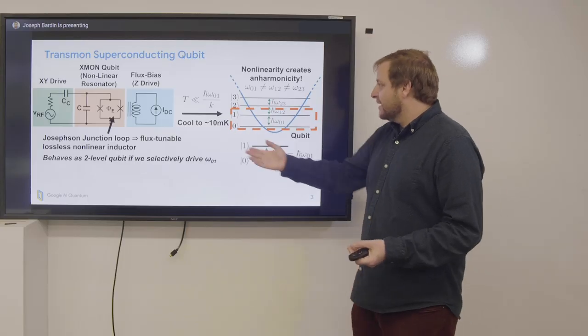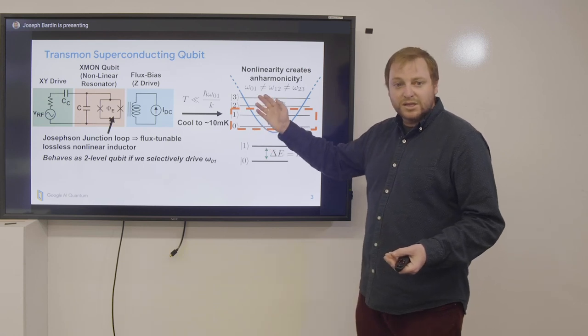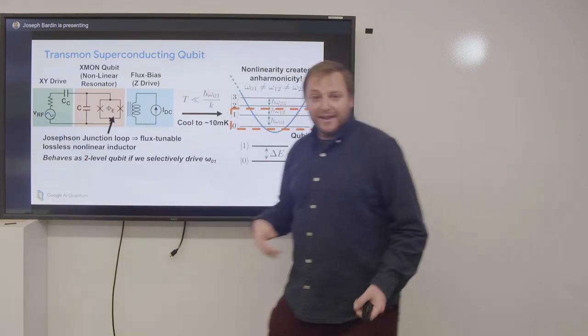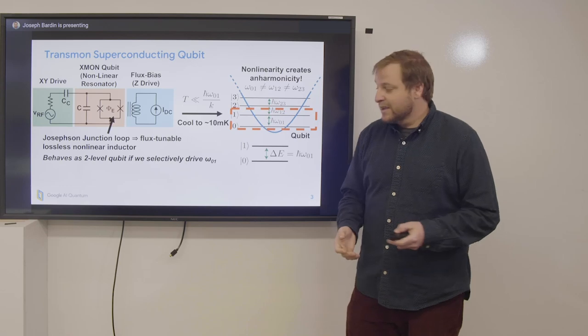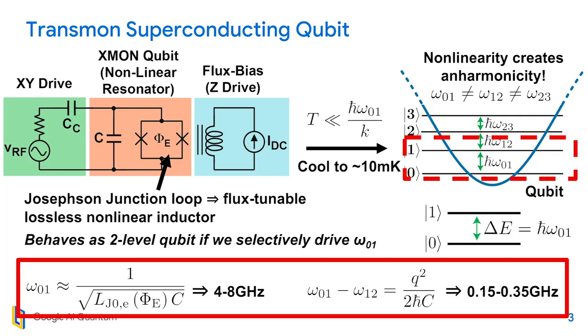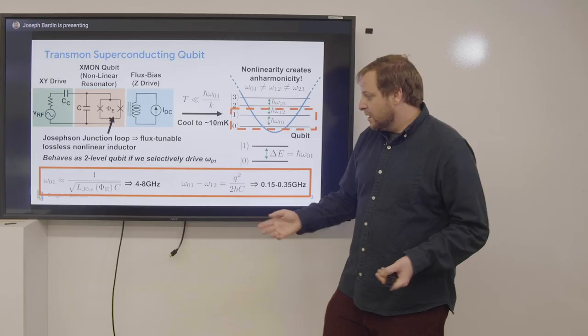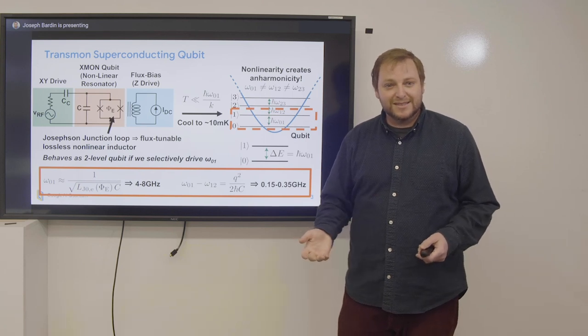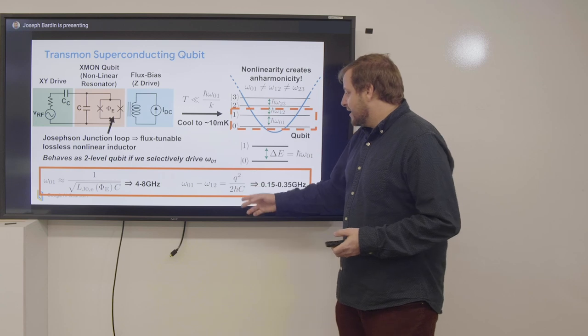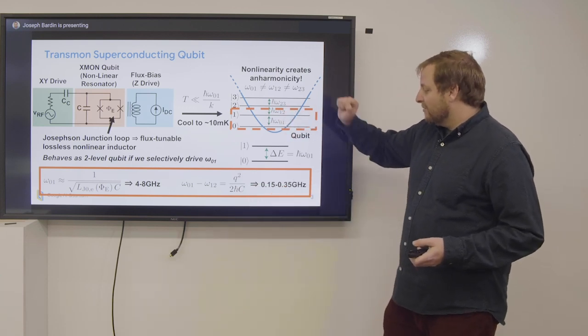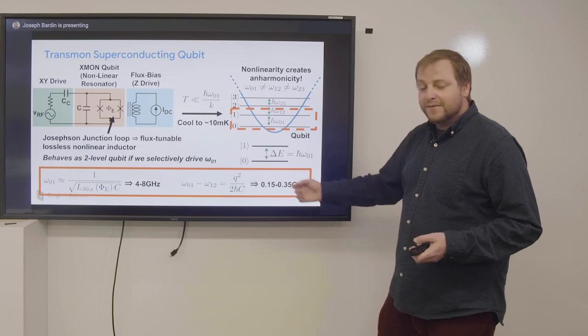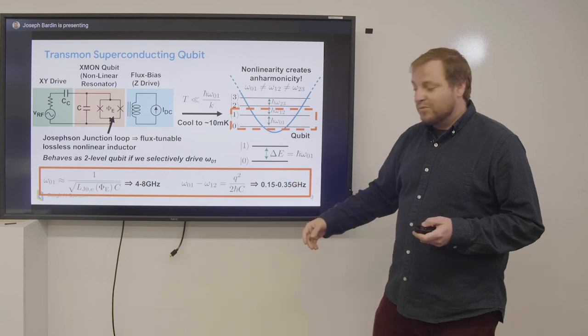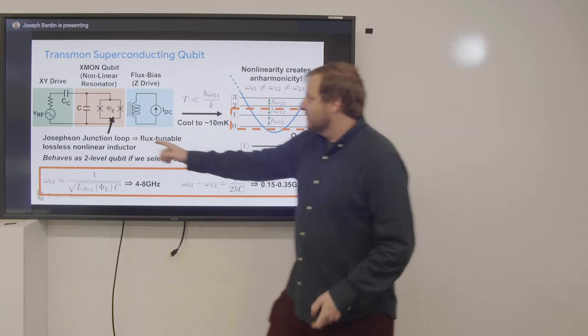What that means is that if we want to drive from the 0 to 1 state we drive at omega 0 1. If we want to go from 1 to 2 we drive at omega 1 2 and all these are different frequencies. The more nonlinear the qubit is the bigger the differences between each of these spacings and the easier it is to address an individual spacing. So if we can constrain our drive signals to just omega 0 1 then we can address the 0 1 subsystem and it behaves as an ideal two level qubit. To put some numbers on this typical frequencies for omega 0 1 are 4 to 8 gigahertz which means that we really need to cool to the 10 millikelvin range so that we have sufficiently suppressed thermal noise in the resonator and our anharmonicity or difference between omega 0 1 and omega 1 2 expressed in Hertz is about 150 to 350 megahertz. As I'll mention shortly this is an engineerable parameter based on the capacitance in the resonator.